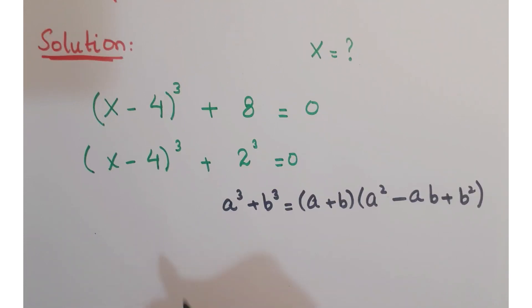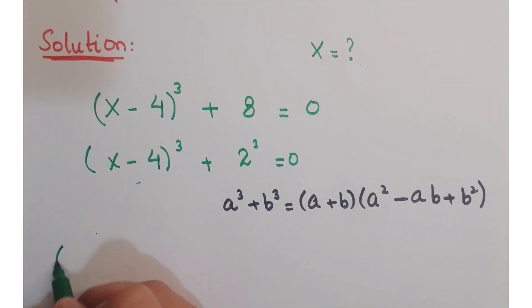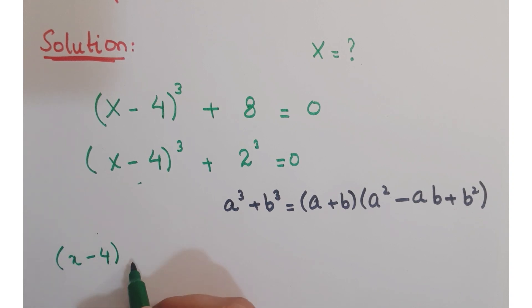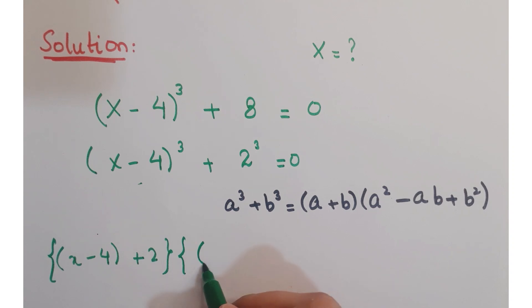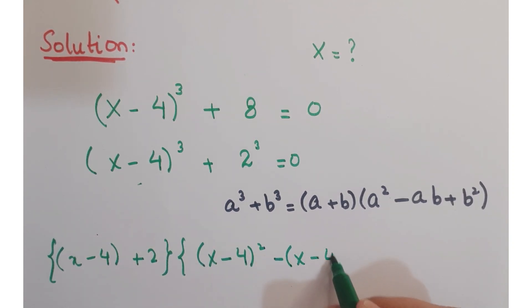Considering this as a and this as b, you can write it as x minus 4 plus 2 into x minus 4 whole square minus x minus 4 into 2 plus 2 square equals 0.